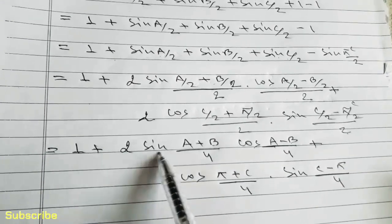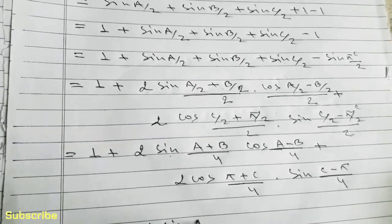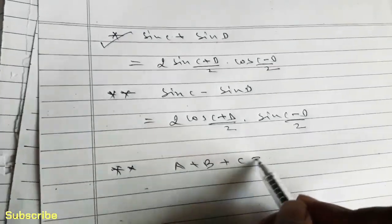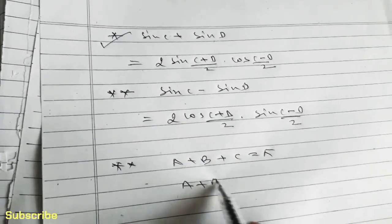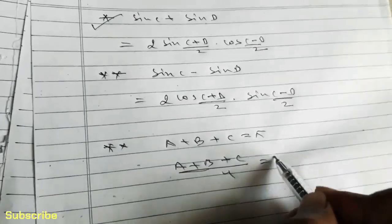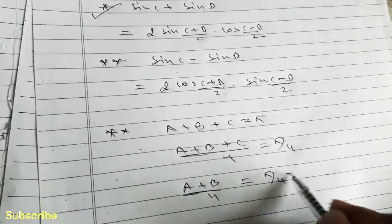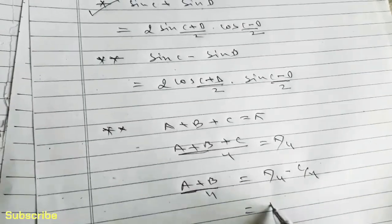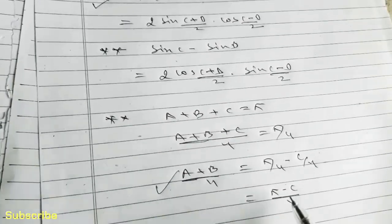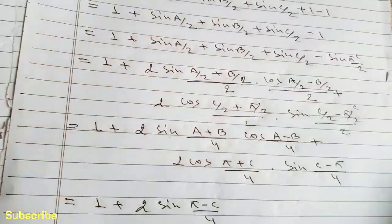Now sin(A plus B by 4) can be replaced by sin(π minus C by 4). We are given the condition A plus B plus C equals pi, so when we divide both sides by 4, we get A plus B by 4 equals pi by 4 minus C by 4, that means pi minus C by 4. So the value of A plus B by 4 can be replaced by pi minus C by 4.